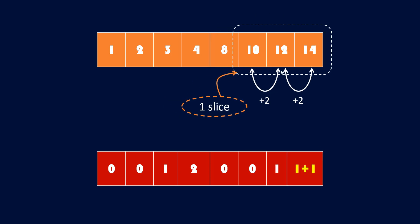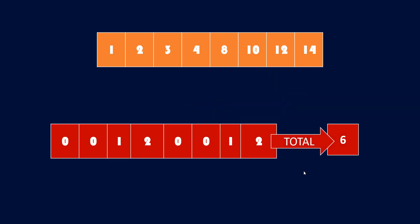Moving ahead, this position also gives an arithmetic slice with difference 2, so we compute 1 plus the 1 from the i-1 position, giving 2. Now at the end, we sum the DP array to get the total number of arithmetic slices, which is 6 in this particular case.